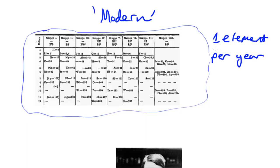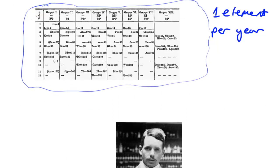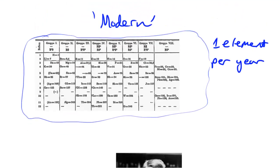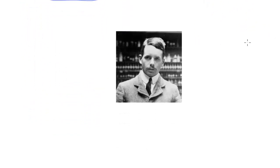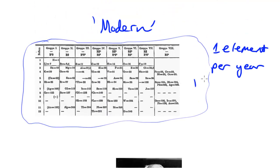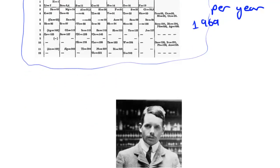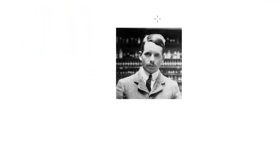So every single year at least one new element was being discovered, and from that he probably got an indication that there were probably going to be more discovered. Moving forward in time from 1869 when he published this table, about seven years after Mendeleev had passed away — Mendeleev died around 1907 — so this is about seven years later, a man named Henry Moseley came along.